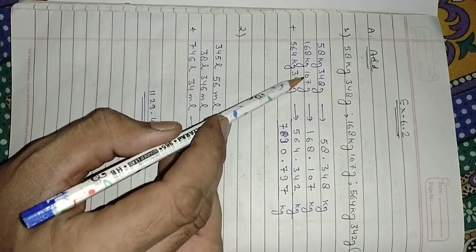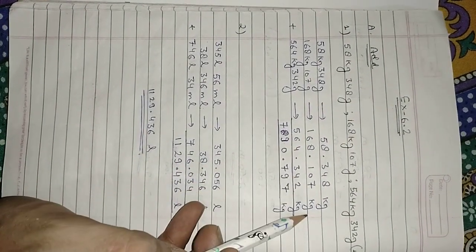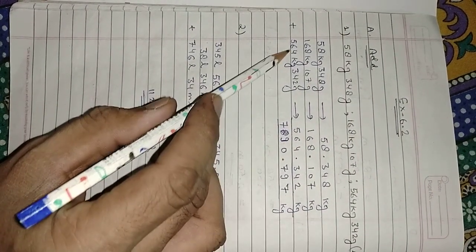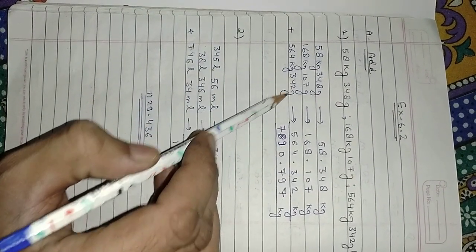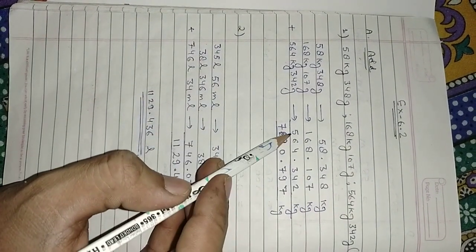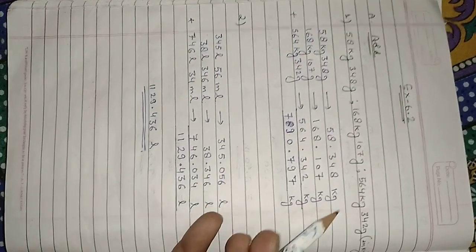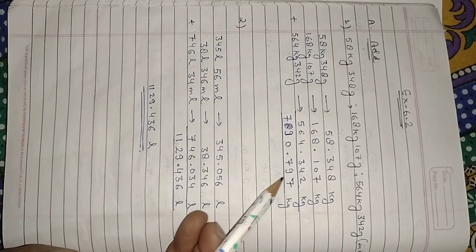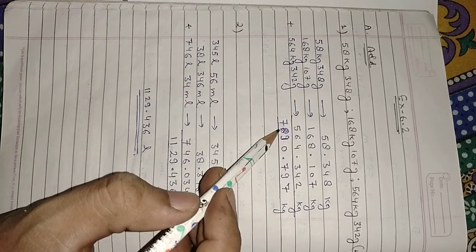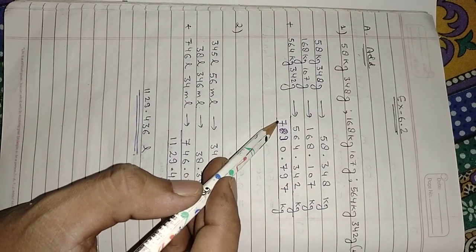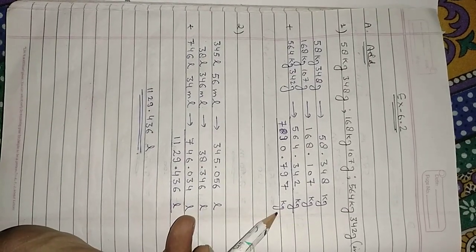Similarly, 64 kg and 342 g: 64 kilograms, and 342 grams divided by 1000. Then add both results. The final answer is 90.797 kilograms.